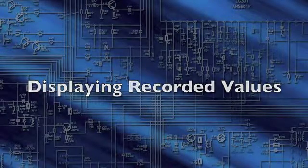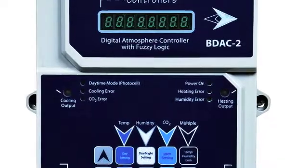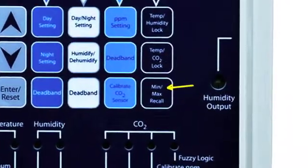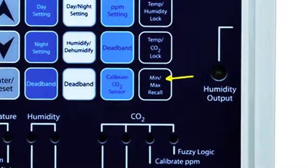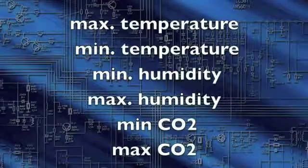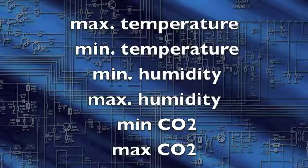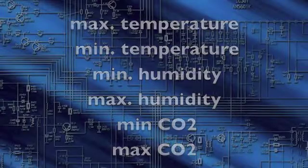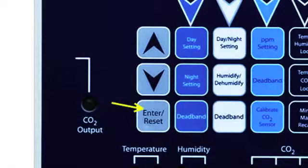Displaying Recorded Values. Press the Min-Max Recall button to display the minimum and maximum recorded values for temperature, humidity, and CO2 level. Press the button repeatedly to cycle through the values in the following order: Max Temperature, Min Temperature, Min Humidity, Max Humidity, Min CO2, Max CO2. Press Enter Reset to reset a displayed value.